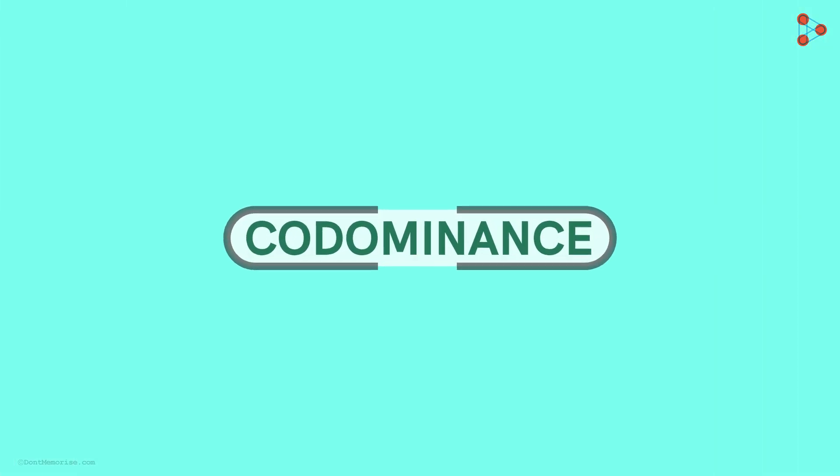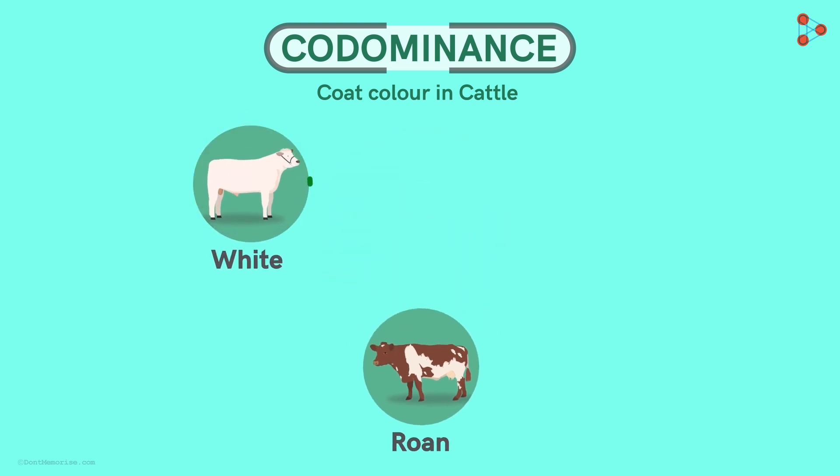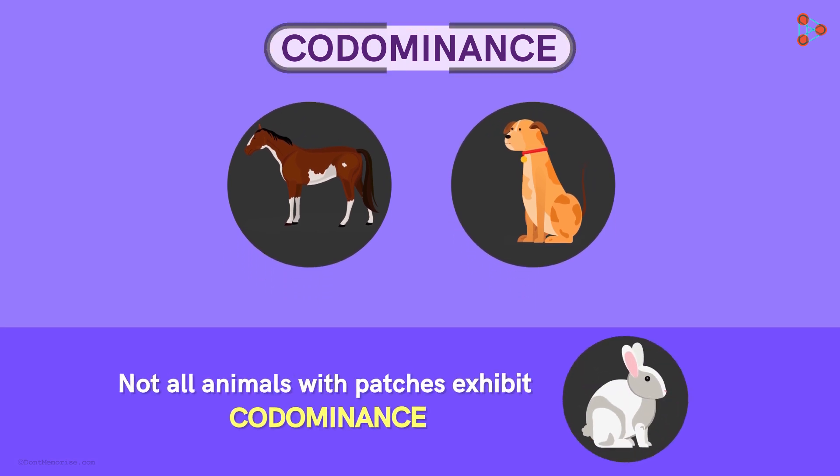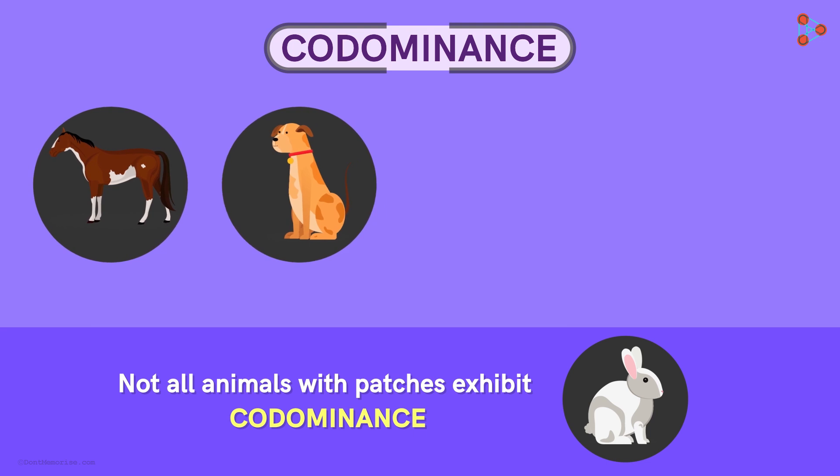Now apart from humans, there are several other animals that exhibit co-dominance. Cattle for example, have roan coat colour. This is obtained on crossing cattle having white coat colour with cattle having red coat colour. Many other animals have a skin coat with two colours or have patches on their skin coat which are examples of co-dominance. But please note that not all animals with patches will always be examples of co-dominance.